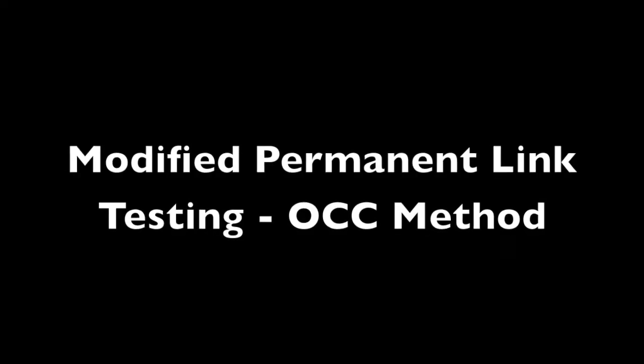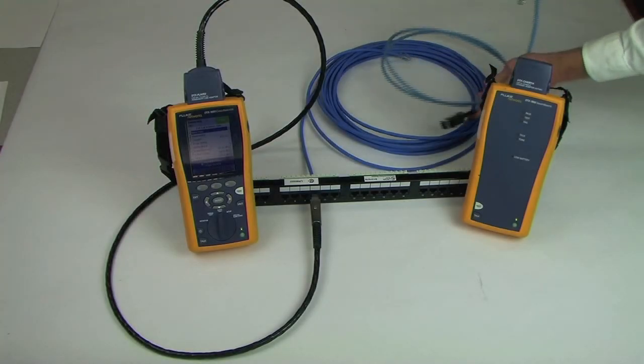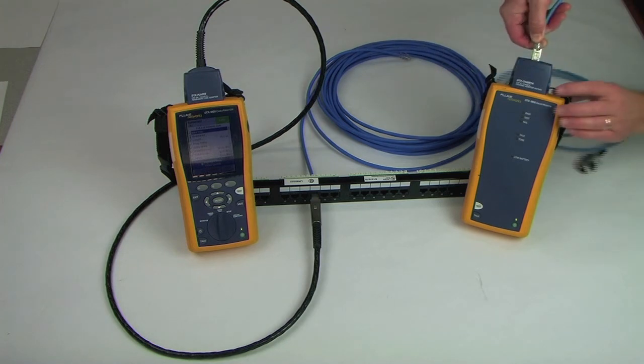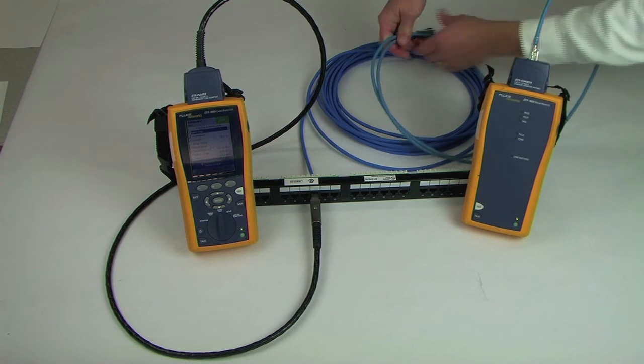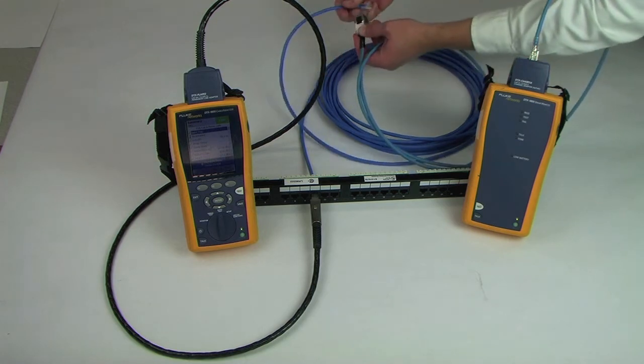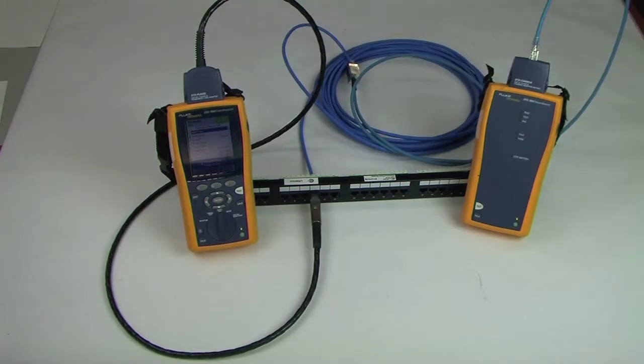Now, we'll test the same link using the OCC field-plug test adapter. The test adapter modular plug will be inserted into the channel adapter connected to the smart remote. The field-terminated plug is inserted into the test adapter modular jack. This test configuration allows the RJ45 field-terminated plug to be properly tested.